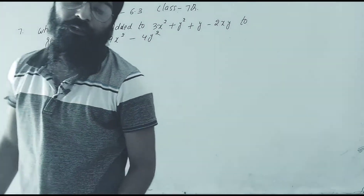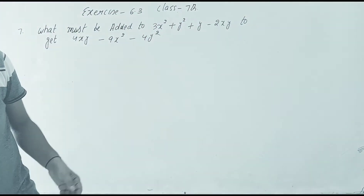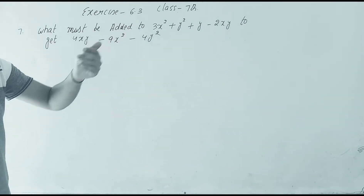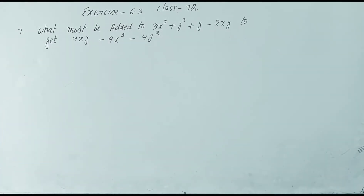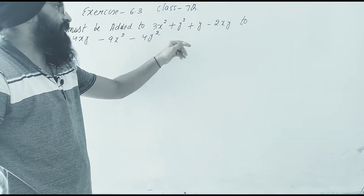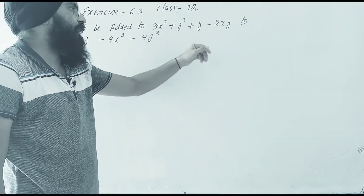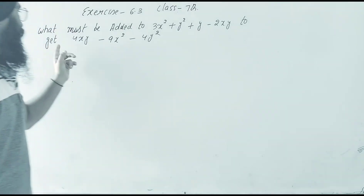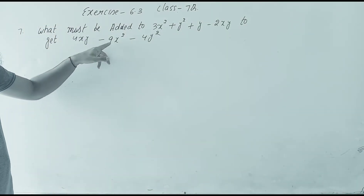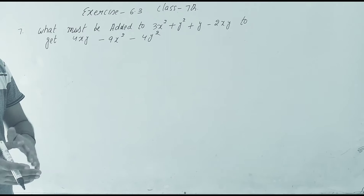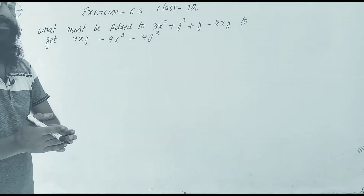Hello students, today we will discuss question 7 of exercise 6.3. The chapter name is Algebraic Expressions. The question is: what must be added to 3x² + y² + y - 2xy to get 4xy - 9x² - 4y²?